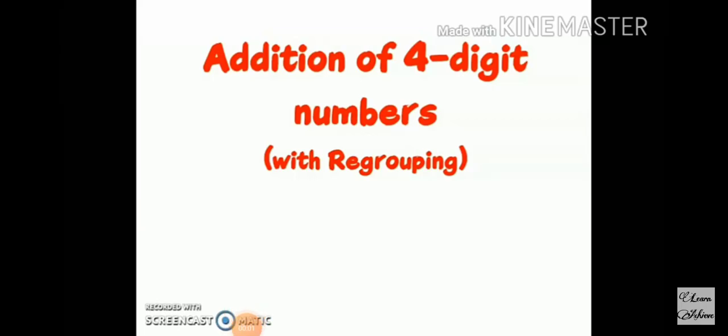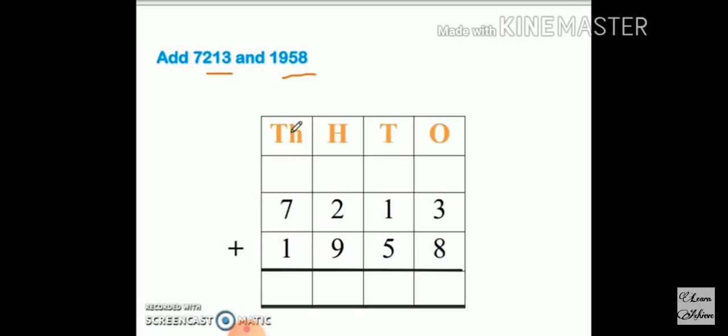In this video we are going to learn addition of four digit numbers with regrouping. So you all are ready? Here the number is add 7213 and 1958. It means thousands, hundreds, tens, units - seven thousand two hundred thirteen plus one thousand nine hundred fifty eight.